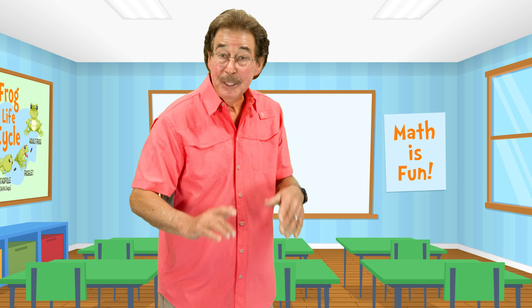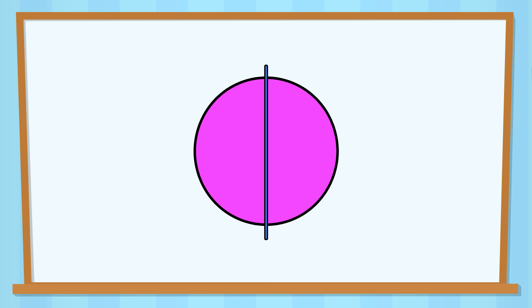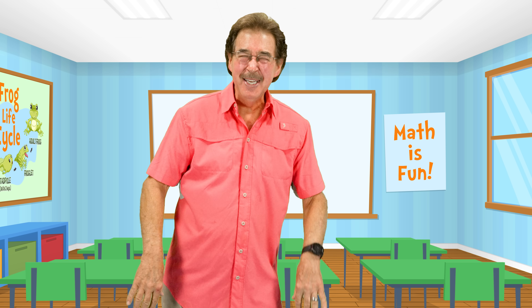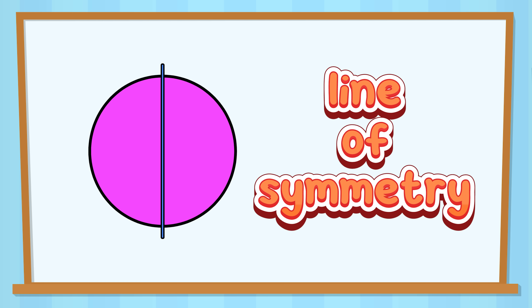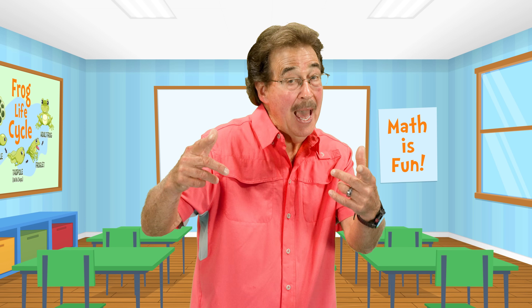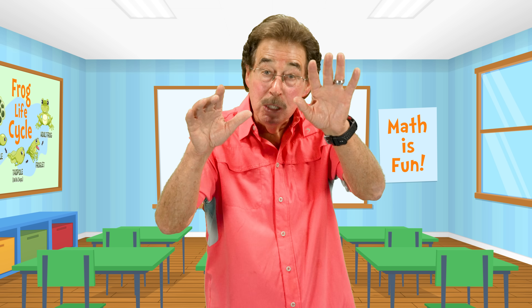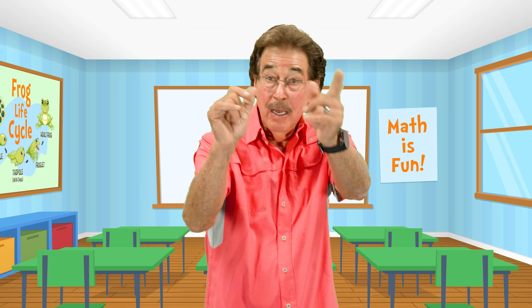Symmetry! Symmetry is when an object looks the same on both sides. The line down the middle is a symmetry line. Each side matches perfectly, each side of the line of symmetry.